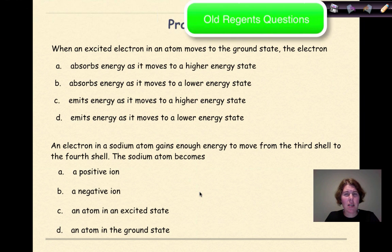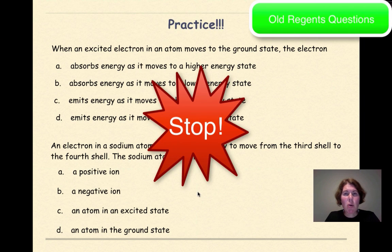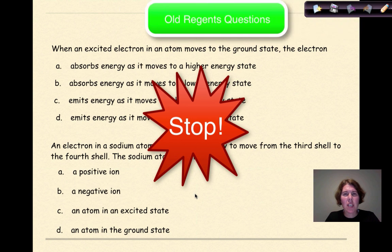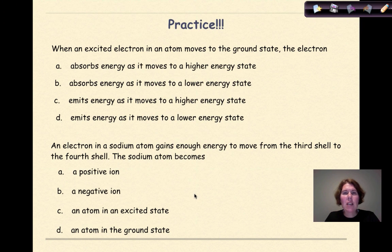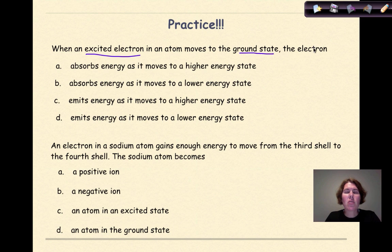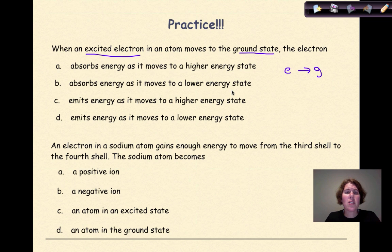Now it's time for a little bit of practice based on the concepts you just learned. Stop and take a moment to read the questions and choose your answer. Welcome back. Let's read through the questions: When an excited electron in an atom moves to the ground state, the electron — just by reading the question we have an atom in the excited state going back down to the ground state — does it: A) absorb energy as it moves to a higher energy state, B) absorb energy as it moves to a lower energy state, C) emit energy as it moves to a higher energy state, or D) emit energy as it moves to a lower energy state?